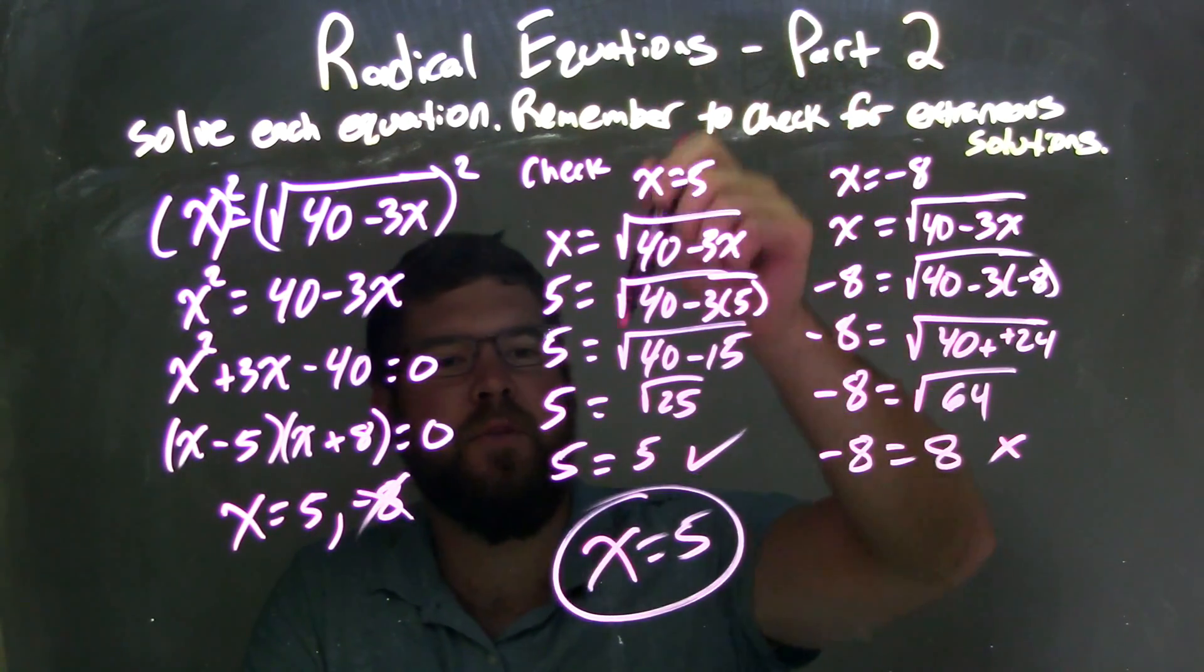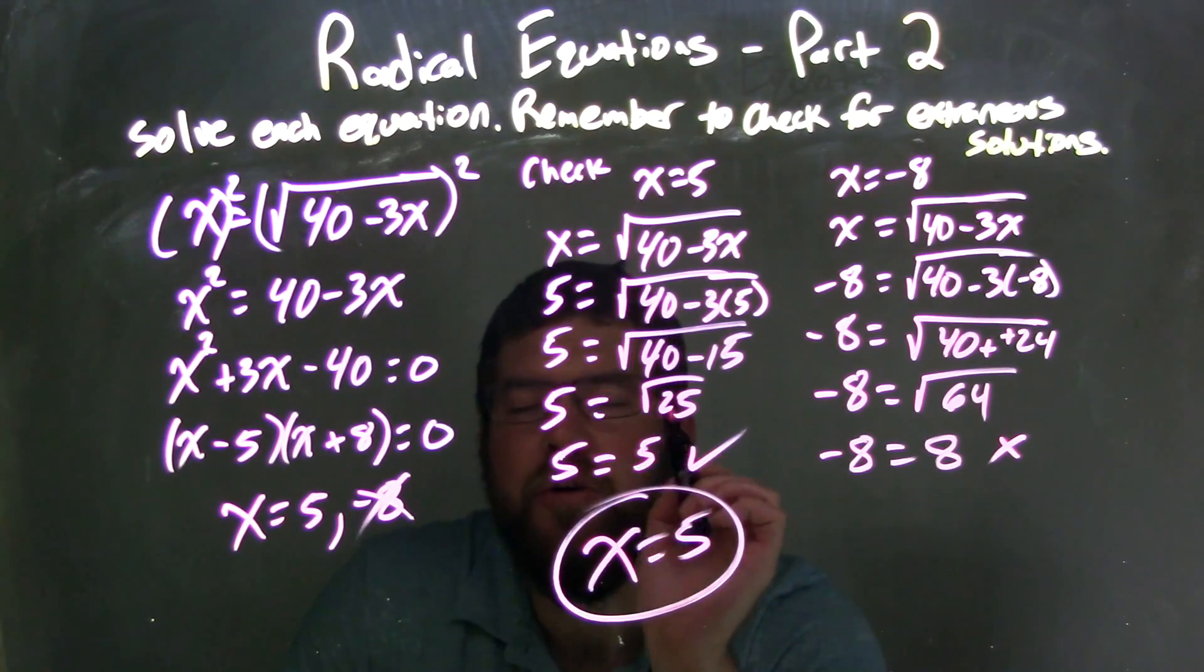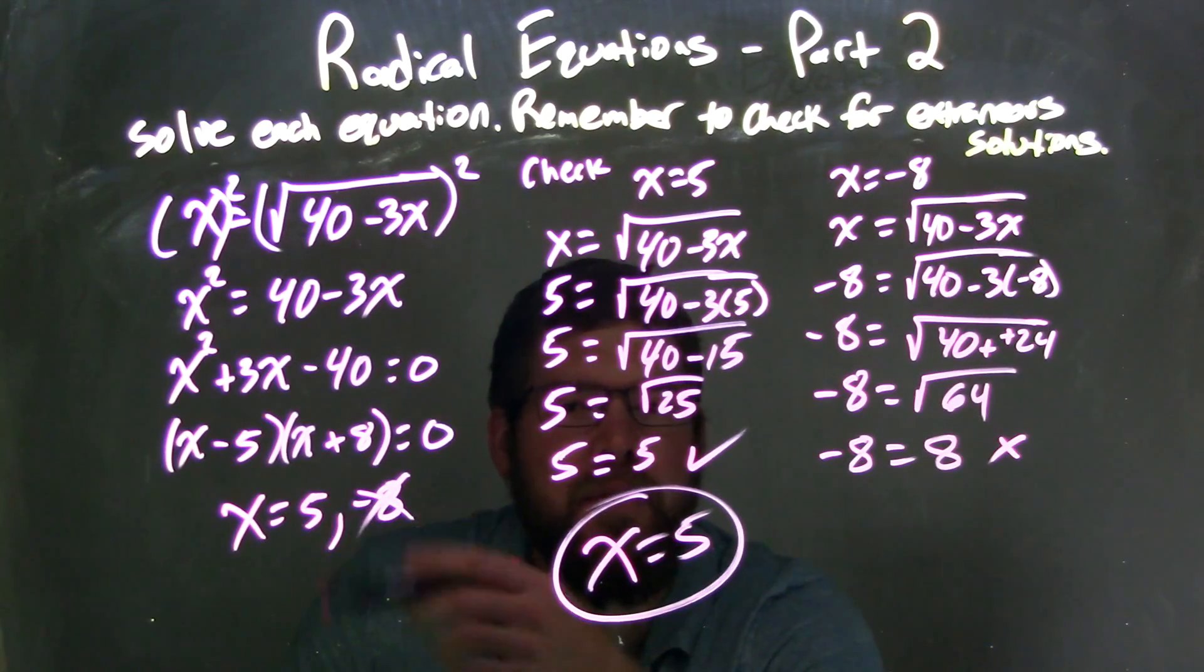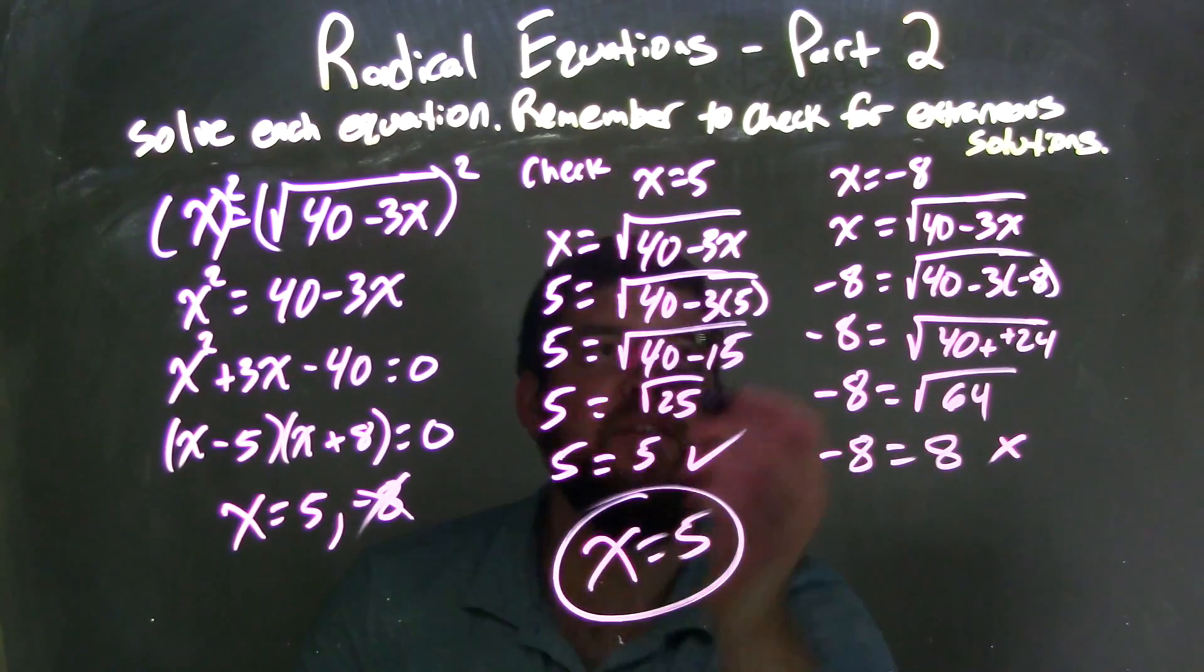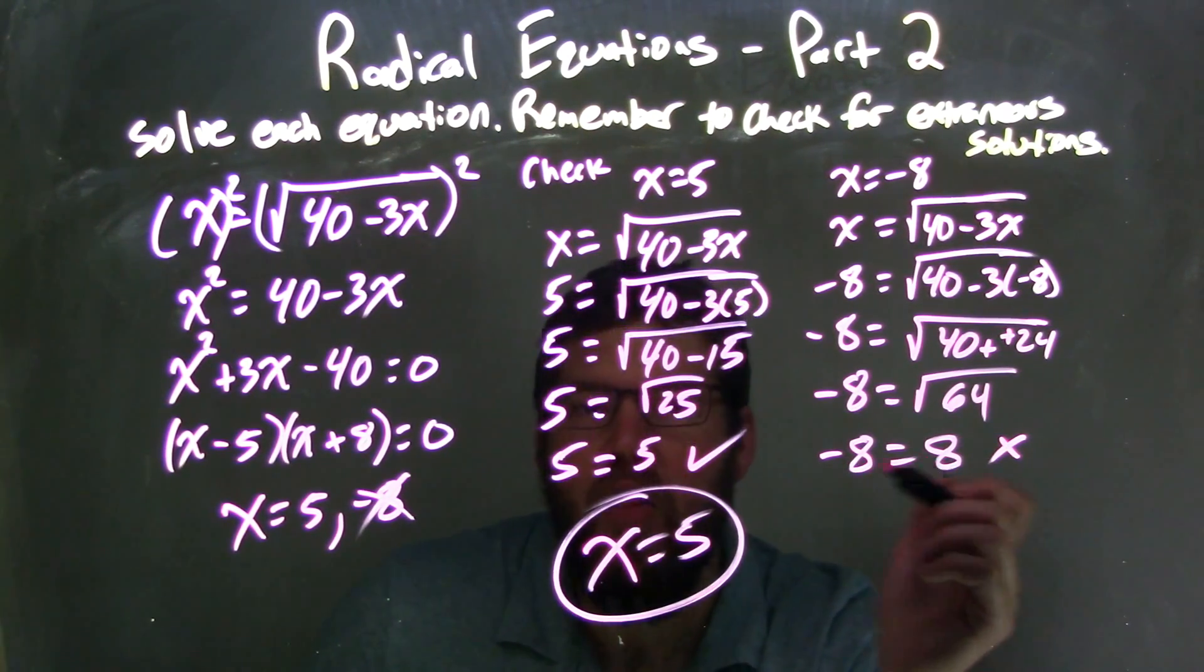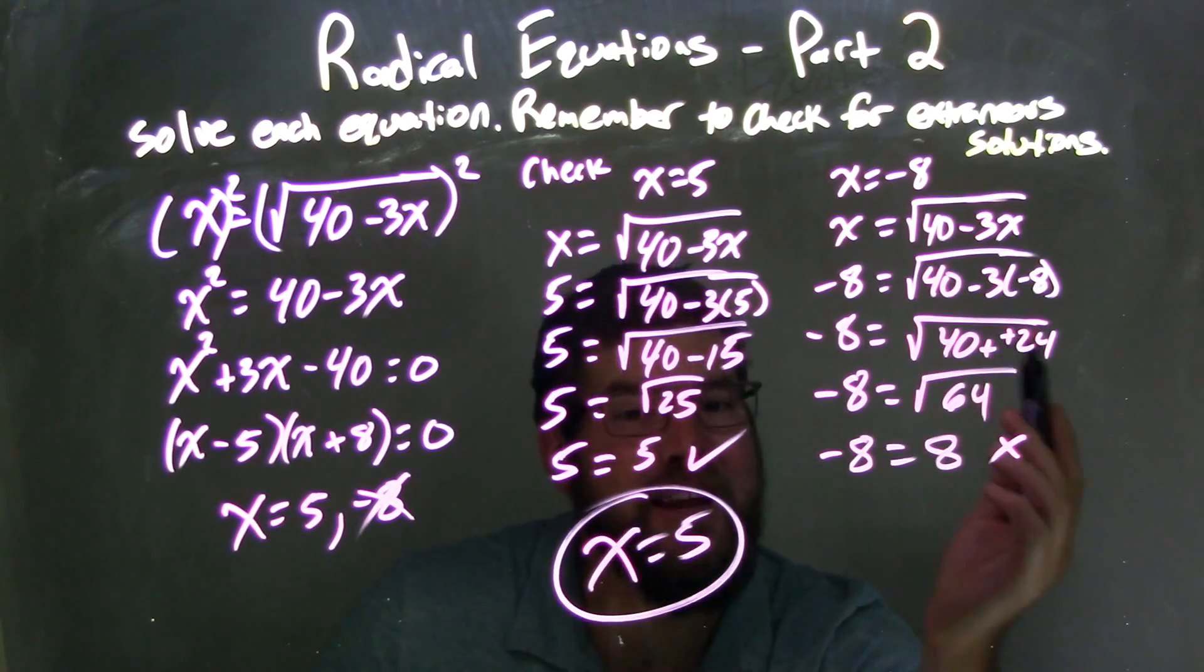I checked those. I plugged 5 in, and when I simplified, my left and right-hand side were both 5, making them equal, confirming that 5 is a real solution. When I did the same with negative 8, when I simplified, I had negative 8 equals positive 8. Negative 8 and positive 8 are not equal, so it's not a true statement, making negative 8 an extraneous solution.